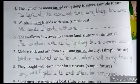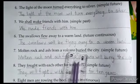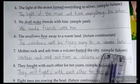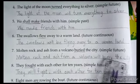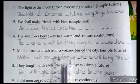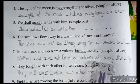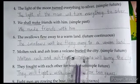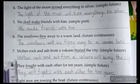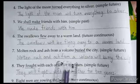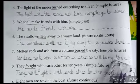Next sentence: 'Molten rock and ash from a volcano buried the city' — change to simple future. Simple future means we use 'will' and the verb in first form. 'Buried' — its first form is 'bury': 'Molten rock and ash from a volcano will bury the city.'